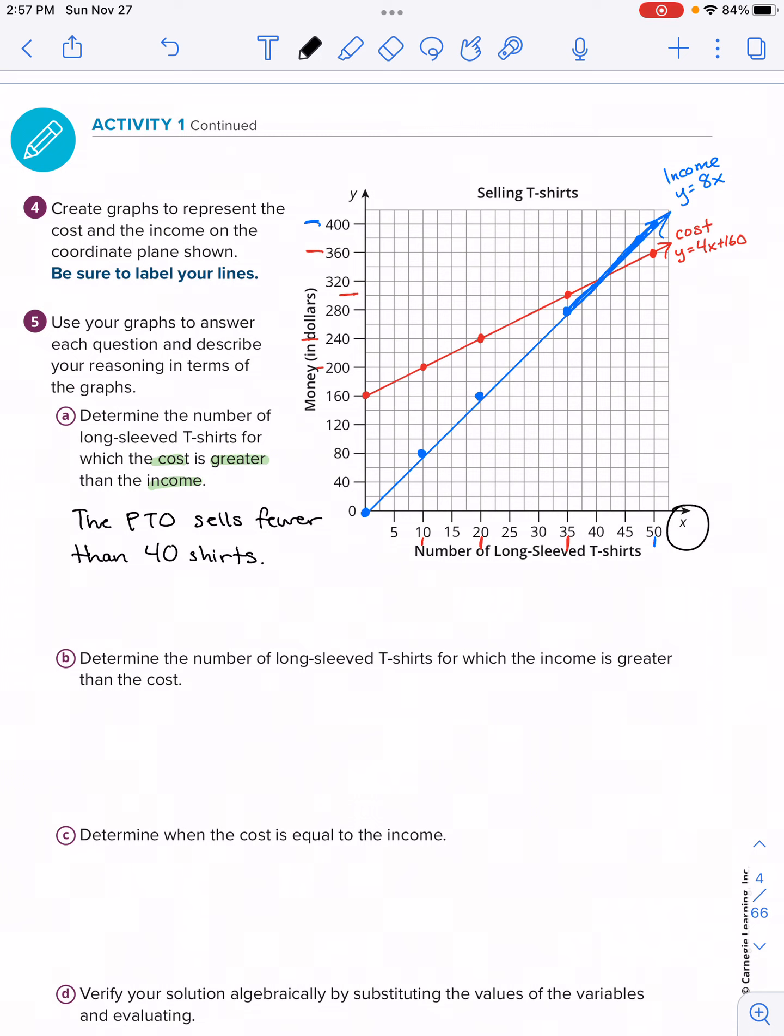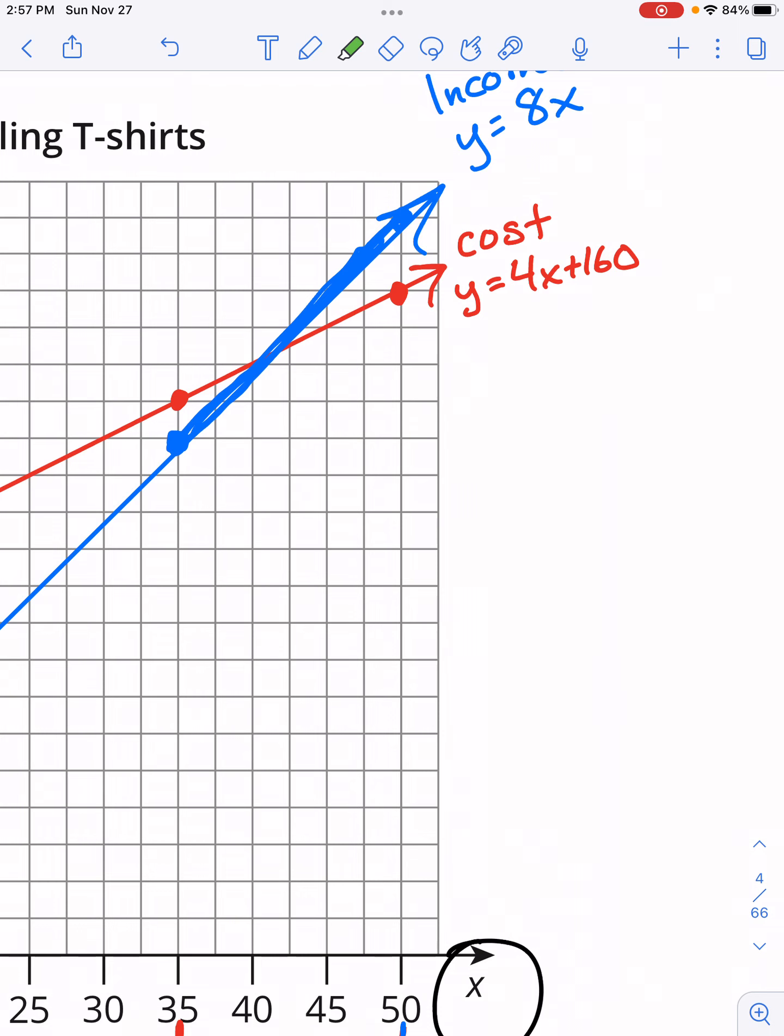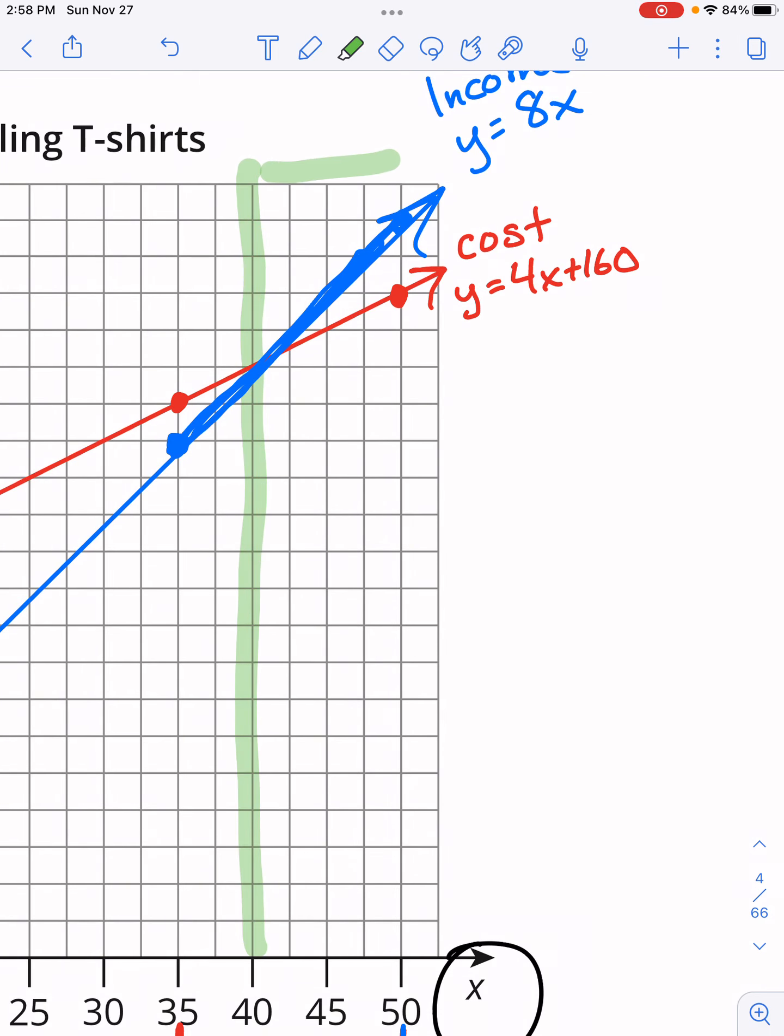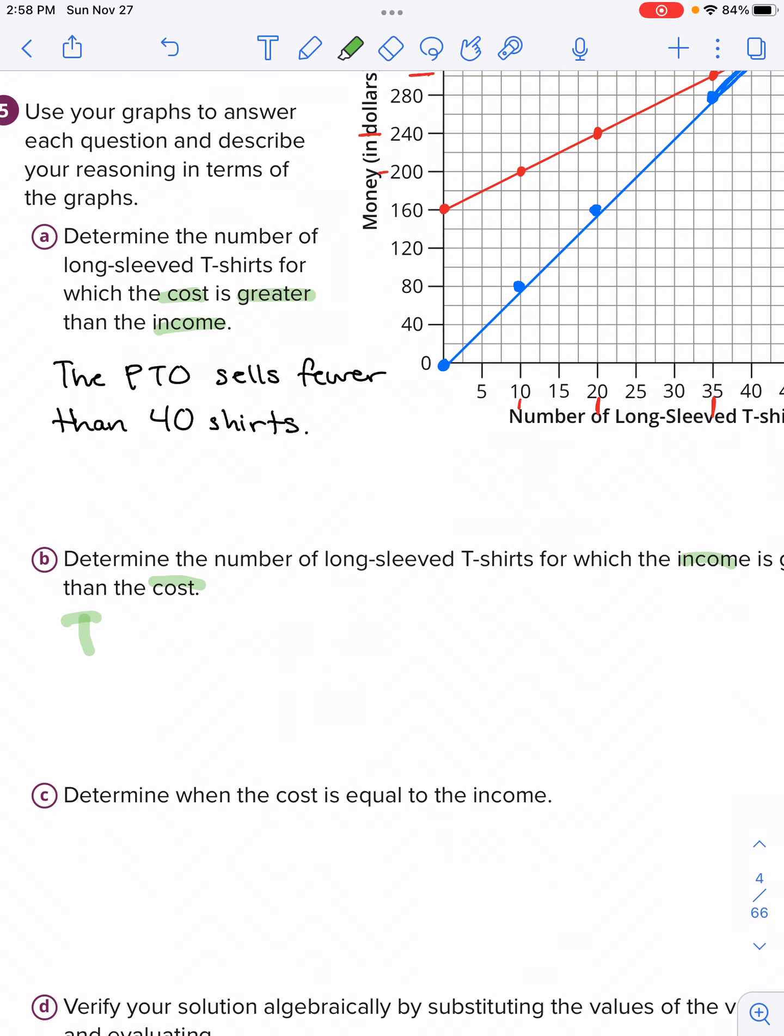If they don't sell that much, that means they're going to be in debt, and that's represented here in our profit. See all these negative values above this line? So we got to sell more than 40 shirts in order to make a profit. Part B: Determine the number of long sleeve t-shirts for which the income is greater than the cost. So income is blue. Which section of this graph is blue above? So everything to the right of this. So if the PTO sells more than 40 shirts, that blue path is higher than the red path. So when the PTO sells more than 40 shirts.